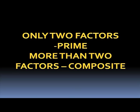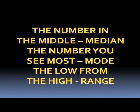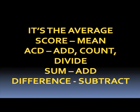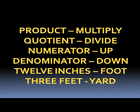More than two factors: Composite. The number in the middle: Median. The number you see most: Mode. The low from the high: Range. It's the average score: Mean. Add count device: Sum. Add: Difference — Subtract. Product — Multiply. Quotient — Divide. Numerator: Up. Denominator: Down.